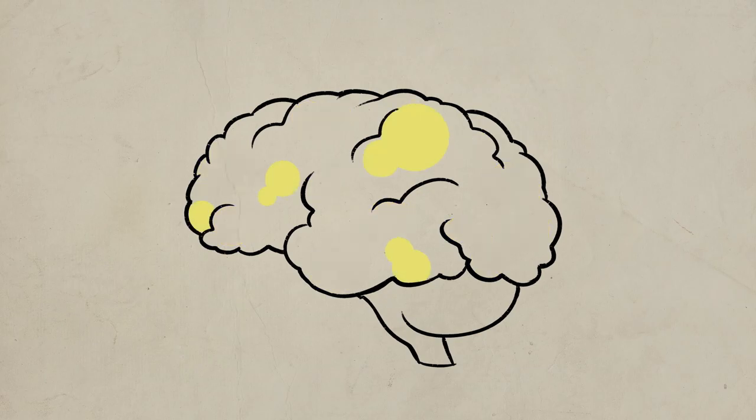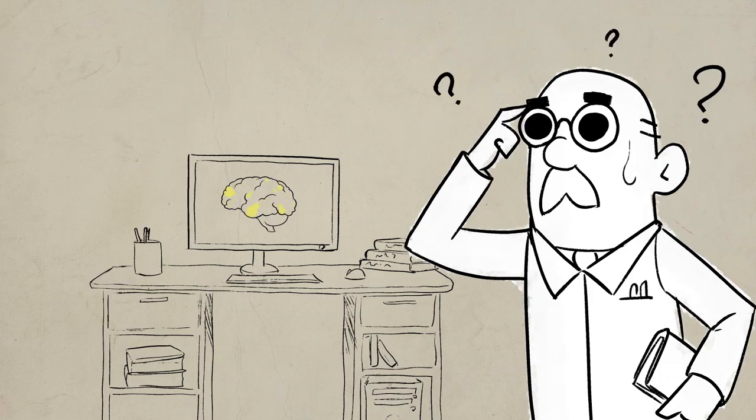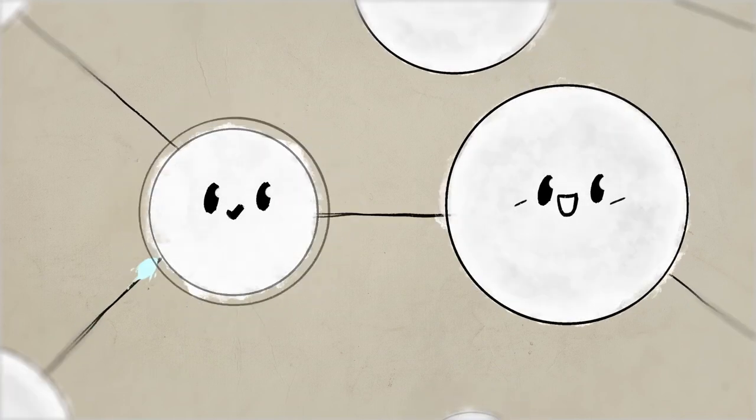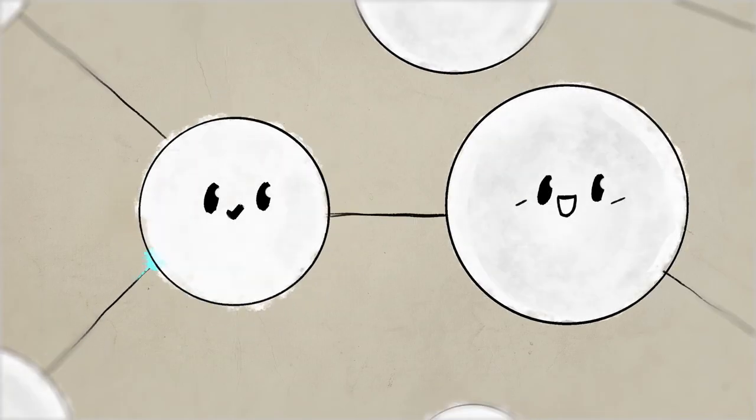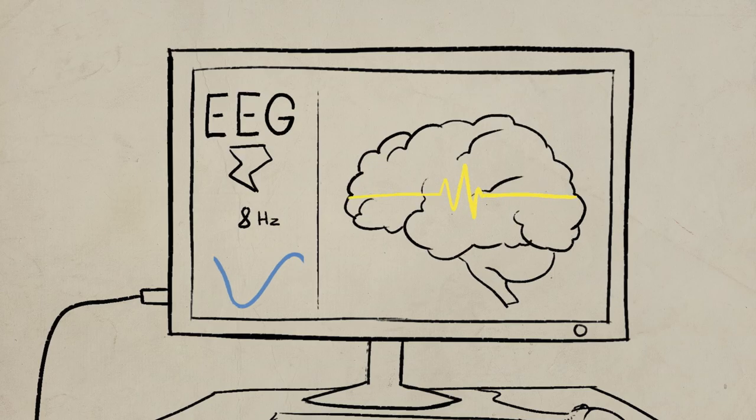Our brain contains billions of neurons and these seem impossible to map and to locate the origin of a problem. We only have proof that since the 1930s, data exchanges between the neurons produce a small electromagnetic field that we can measure and study. This is called electroencephalography or EEG.